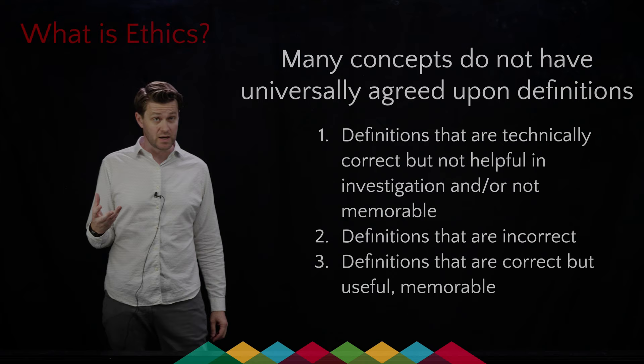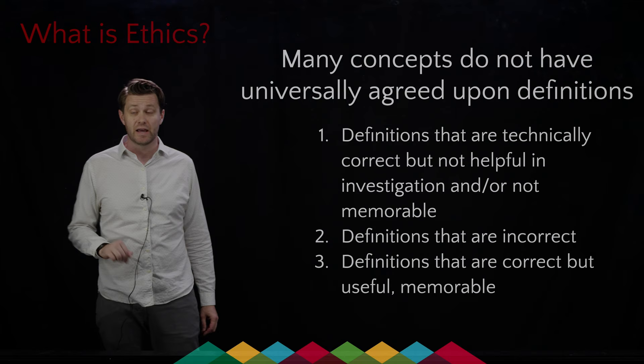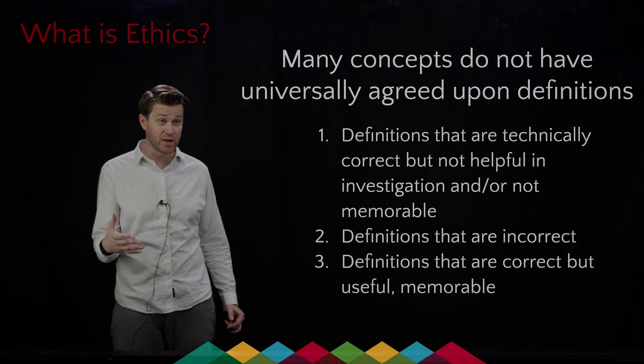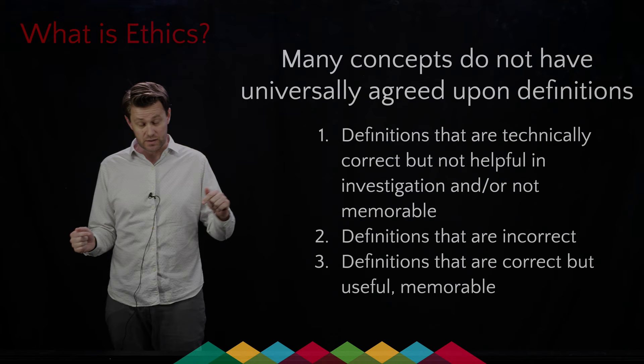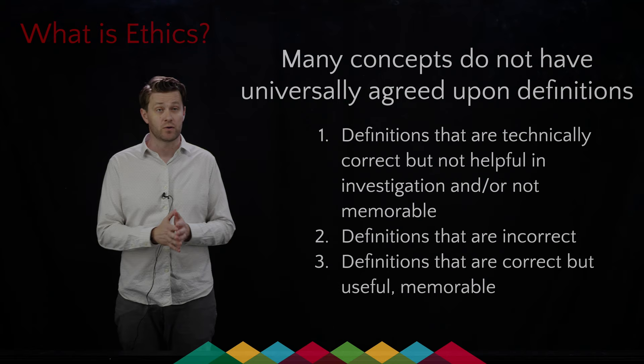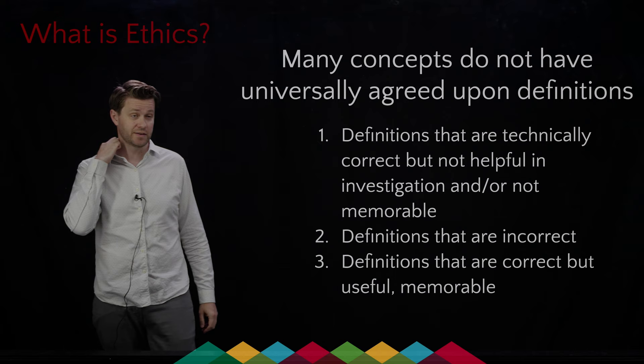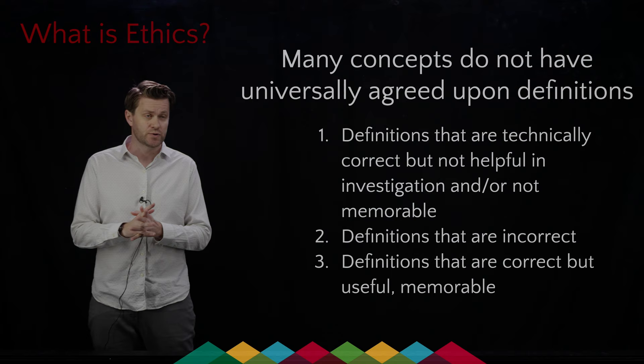There are many concepts in the world — ethics being one, artificial intelligence being another — that don't have easily agreed-upon universal definitions. One implication of that is that you can't simply go to your search engine, type 'what is ethics,' hit enter, and ten seconds later know what ethics is. You'll get tens of thousands of possible definitions.